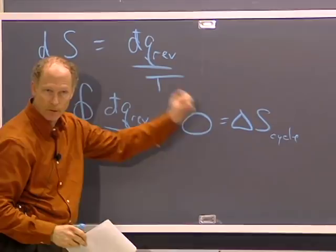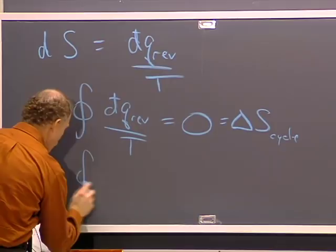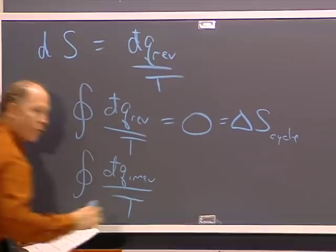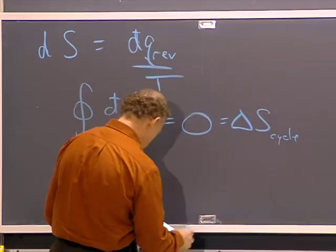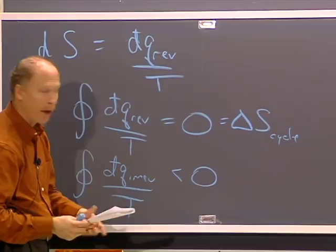If we go around in a cycle, we have the same ending point as the starting point, same state, so the change in a state function has to be 0. But we saw that for an irreversible path around a cycle, this gives something less than 0. And so that was expressed in the Clausius inequality that includes both these cases.